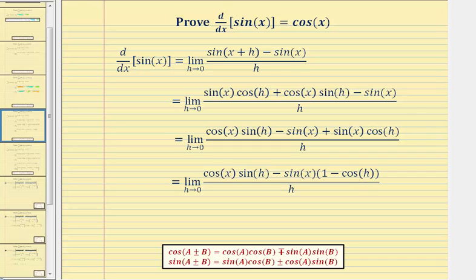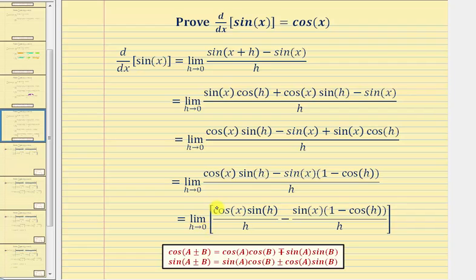We can check this by distributing: negative sine x times one is negative sine x, and negative sine x times negative cosine h is sine x cosine h. Now we'll write this single fraction as a difference of two fractions, both with a denominator of h. So now we have the limit as h approaches zero of cosine x sine h divided by h, minus sine x times the quantity one minus cosine h divided by h.